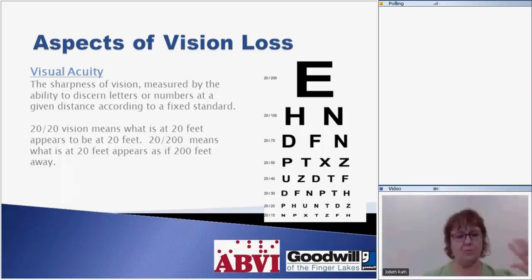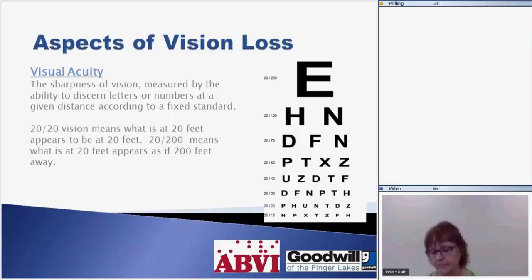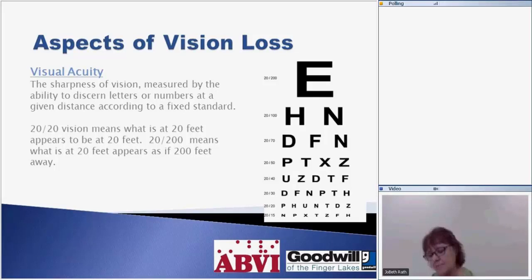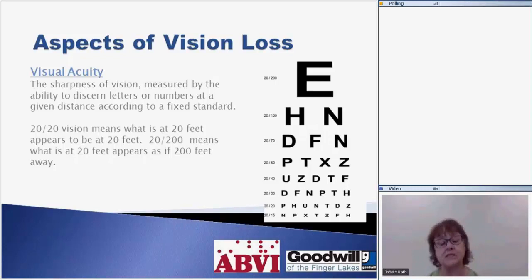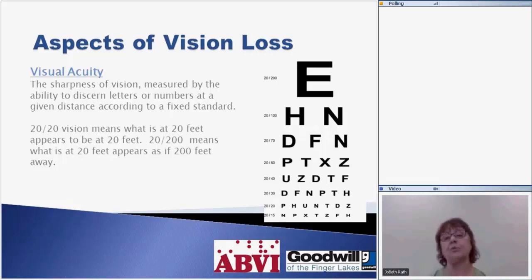Nikki Llewellyn: Welcome. I want to talk about aspects of vision. Vision is not clarity alone — there's acuity, visual field, and contrast sensitivity. Acuity is what you probably most often think of when it comes to vision loss. It is a measurement of clarity, usually measured in 20-foot increments. So 20/20 vision is normal vision, and 20/200 vision means what most people can see at 20 feet appears to the person with 20/200 vision as if it were 200 feet away — that's the blurriness.